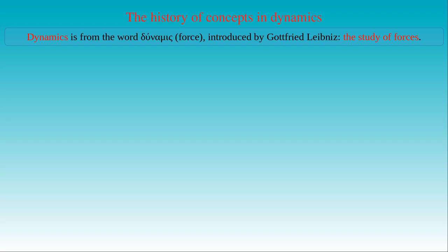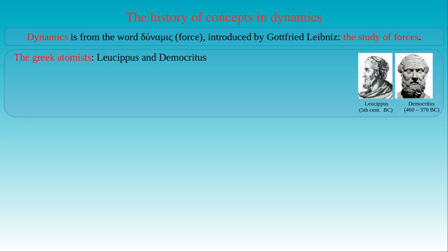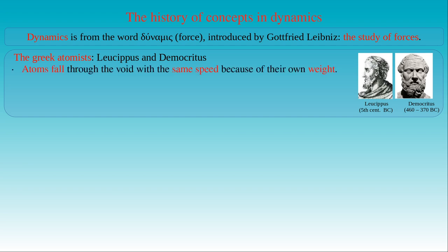In the historical introduction to kinematics, we already mentioned that the Greek atomists, with their two founders Leucippus and Democritus, were the first thinkers who provided a more quantitative picture on motion and change in nature. In their view, the cosmos has two basic constituents — the atoms and the void — where atoms have shape and size and are in constant motion. They claimed that atoms fall through the void with the same speed because of their own weight.